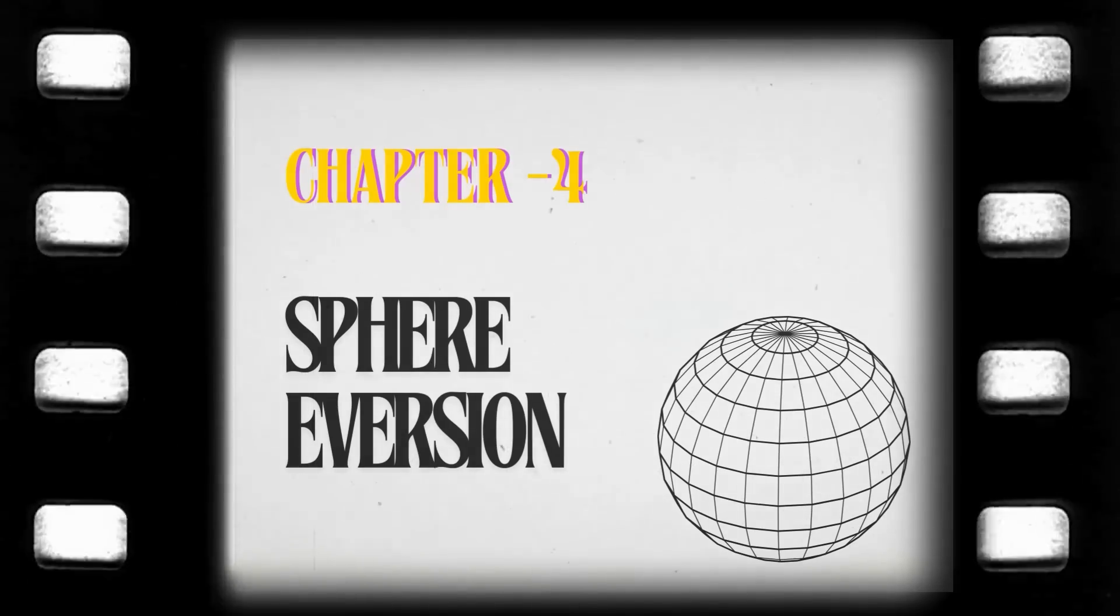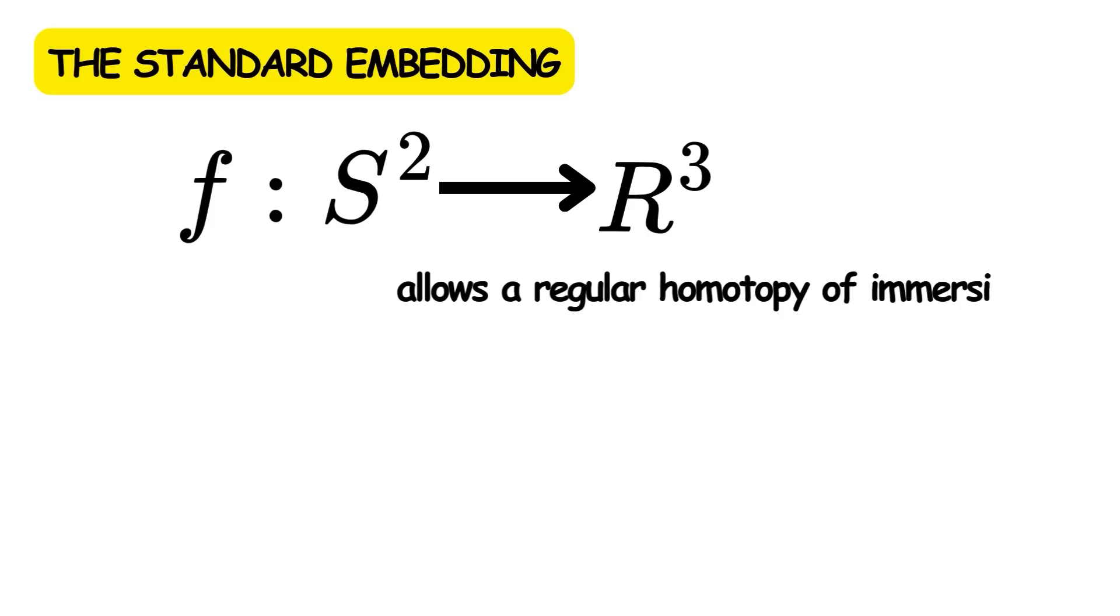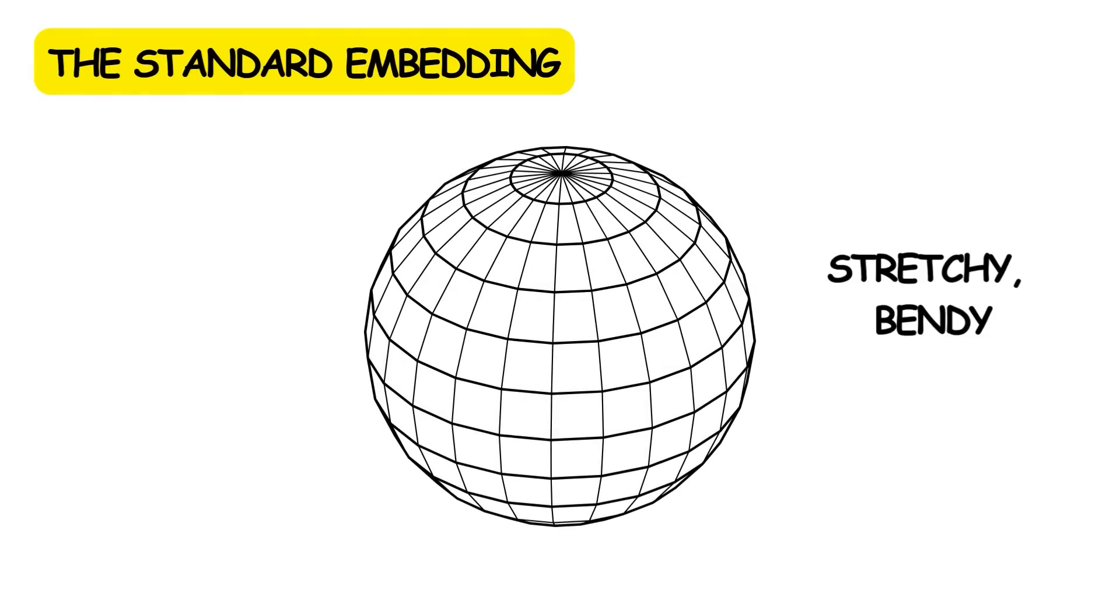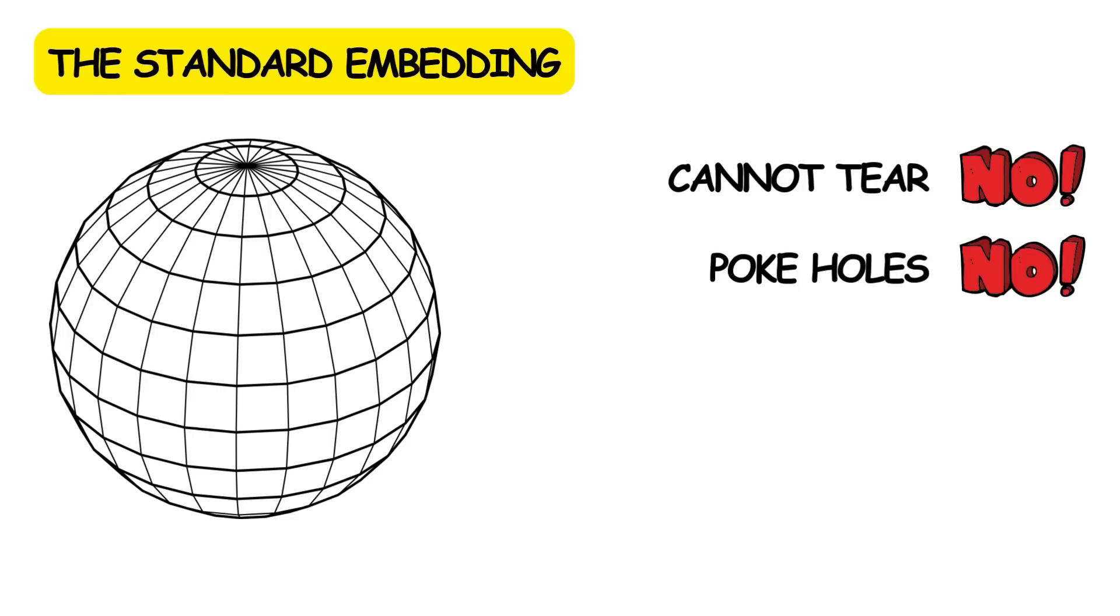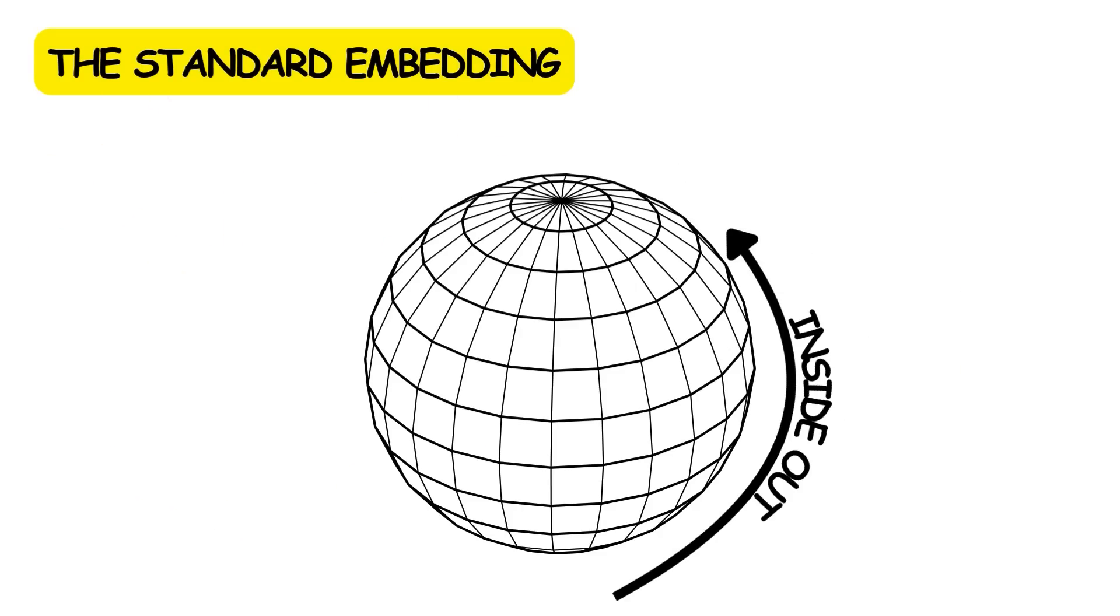Sphere Eversion. In differential topology, the standard embedding F from S-squared to R-cubed allows a regular homotopy of immersions Ft from S-squared to R-cubed, such that F0 equals F and F1 equals negative F. More simply, imagine a sphere made of a stretchy, bendy sheet material. This material can go through itself, but you cannot tear this material or poke holes in it, and you cannot create a crease or sharp bend in the material, or it will be destroyed.